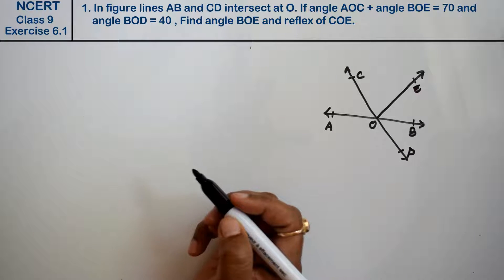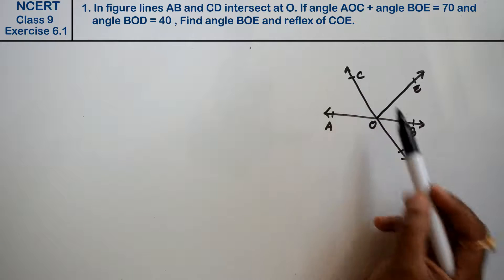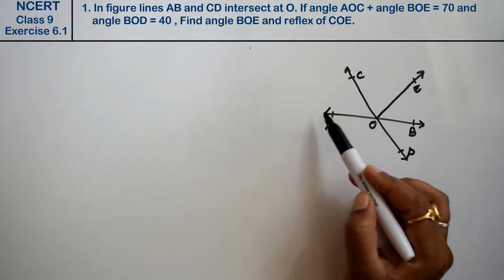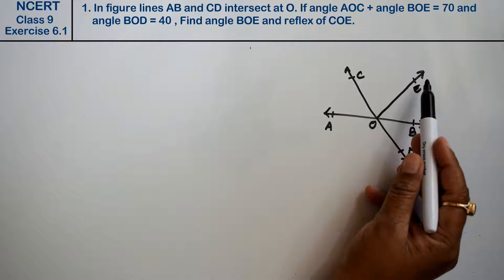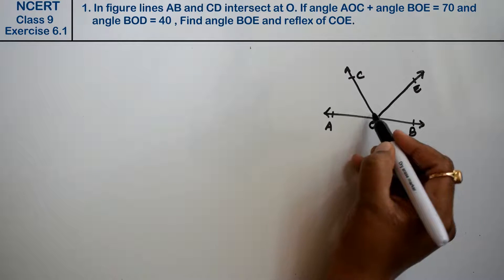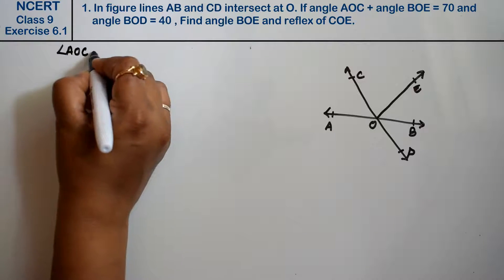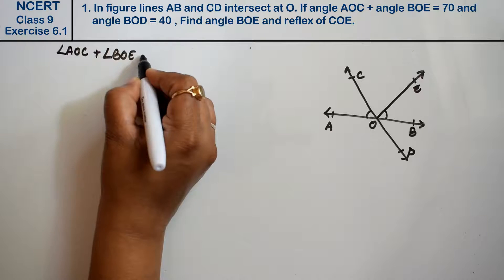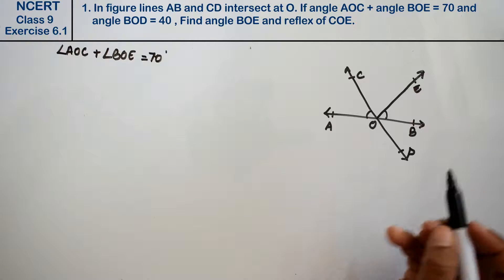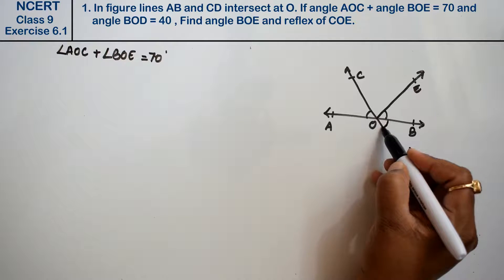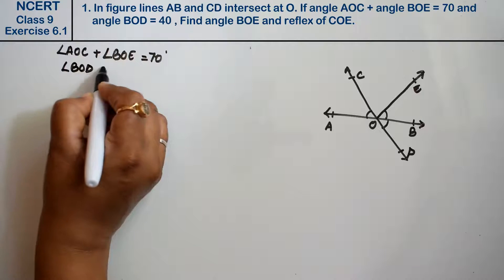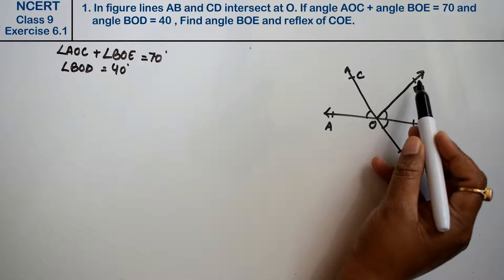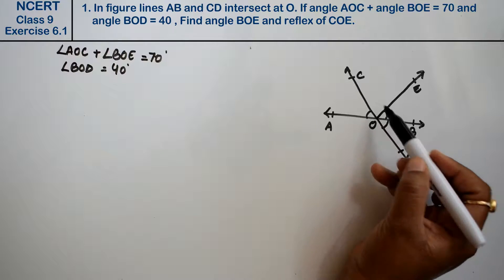The lines AB and CD intersect at O. If angle AOC plus angle BOE equals 70 degrees, and angle BOD equals 40 degrees, find the angle BOE and the reflex angle COE.